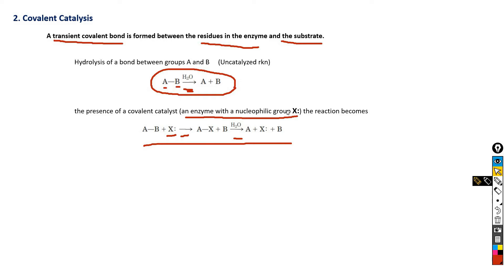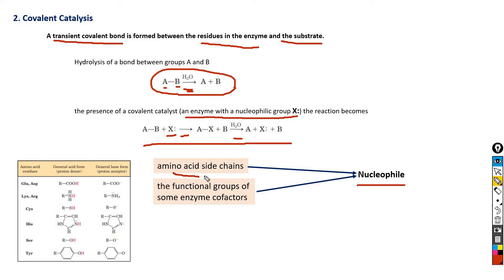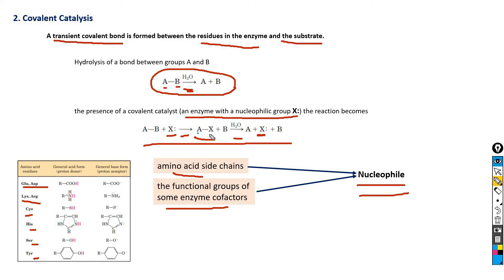The nucleophile in an enzyme consists of amino acid side chains and functional groups of some enzyme cofactors. The amino acid side chains that serve as nucleophiles in covalent catalysis are glutamate, aspartate, lysine, arginine, cysteine, histidine, serine, and tyrosine. The nucleophile of the enzyme forms a covalent complex with the substrate, as seen here, and these covalent complexes undergo further reactions to regenerate the free enzyme. The covalent bond formed between enzyme and substrate activates the substrate for further reactions in a manner specific to the particular group or enzyme.